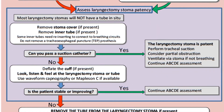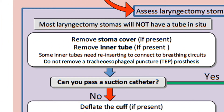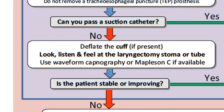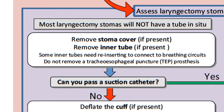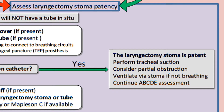The next step is to assess the patency of the laryngectomy stoma. Assessing patency can be broken down into two sequential steps. Step 1: try to pass a suction catheter through the laryngectomy stoma. Step 2: look, listen and feel at the laryngectomy stoma. Before trying to pass the suction catheter, bear in mind that the patient may have a laryngectomy tube with an inner tube or a stoma cover in place, so you will need to remove these if present. If the stoma is patent, the catheter should pass easily into the trachea. Once you have done this, use the suction catheter to suction the trachea, ventilate via the stoma if the patient isn't breathing, and then continue with your ABC assessment.